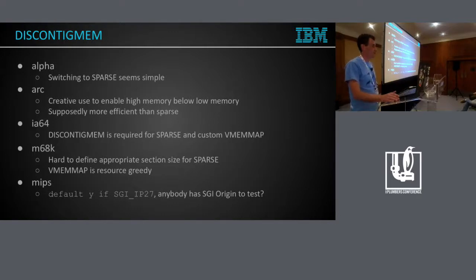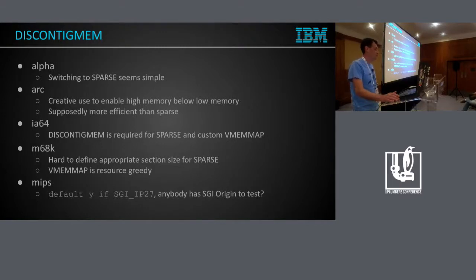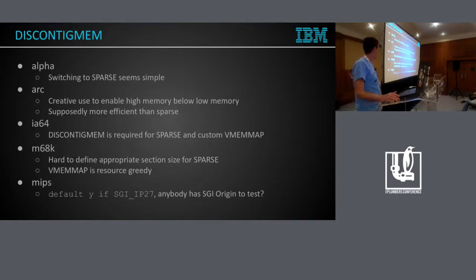IA64 for some reason requires discontinuous memory to enable sparse_mem or in order to use their own version of the mem_map. I didn't dig enough to understand what is going on there, but there are a lot of dependencies on node allocation and memory map allocation buried deep inside IA64. It won't be easy.